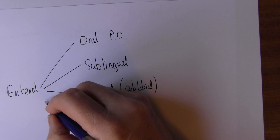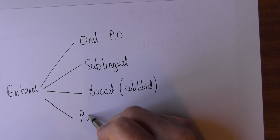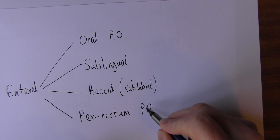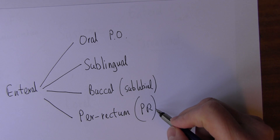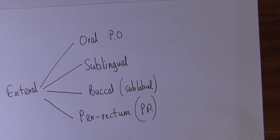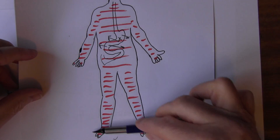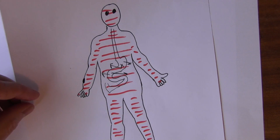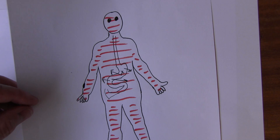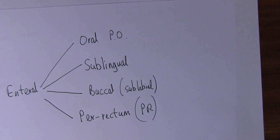We can also give drugs per rectum — through the anal sphincter, PR administration — leaving the drug in the rectum. For example, diazepam can be given this way and it will absorb through the rectal mucosa, which has a good blood supply. From there it enters the blood and circulates around the whole systemic circulation. So that's the enteral route of drug administration.